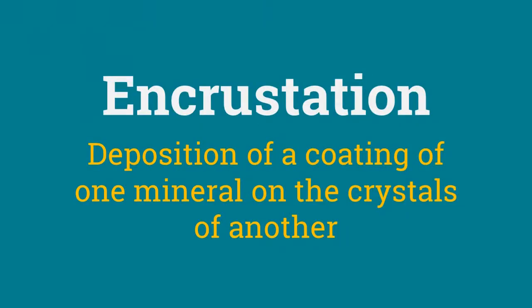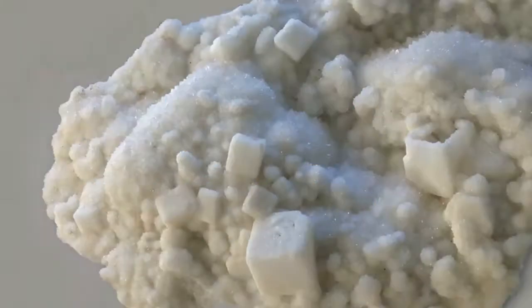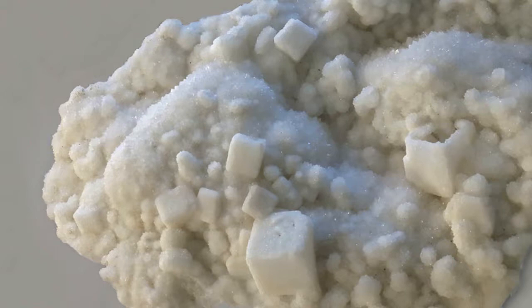Encrustation occurs when the crust of one mineral is deposited over the crystals of another. Often, the substrate over which the mineral originally grew is completely dissolved and removed. This image shows the pseudomorph of quartz after fluorite. Numerous small crystals have completely encrusted the fluorite crystal, preserving the cube structure.